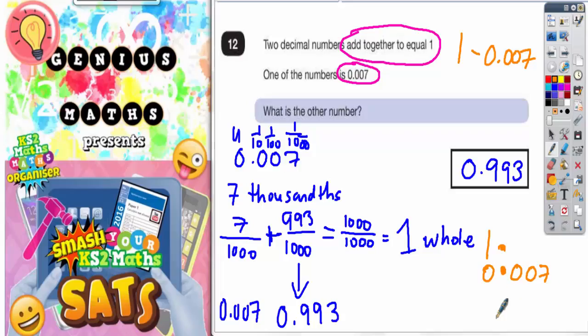But one is one whole one, and because you've got all these gaps here, you fill the gaps in with zeros. So one would be the same as one point zero zero zero. Now if we subtract this, let's see what we get.